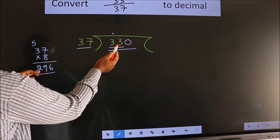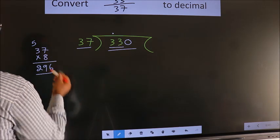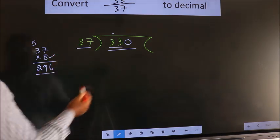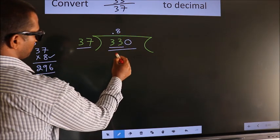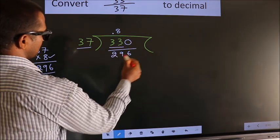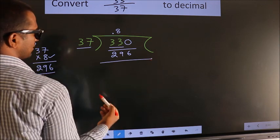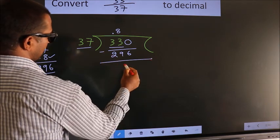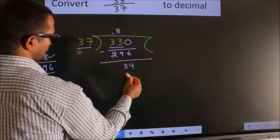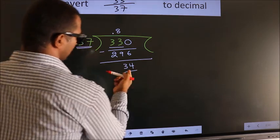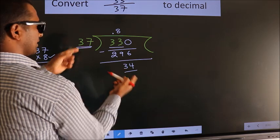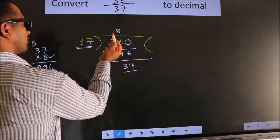296 is close to 330, so we go with 8. 37 times 8 is 296. Now we should subtract. We get 34.